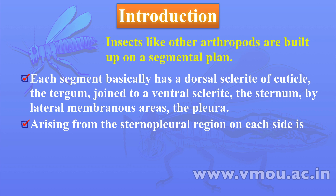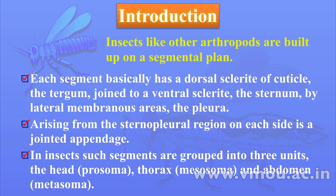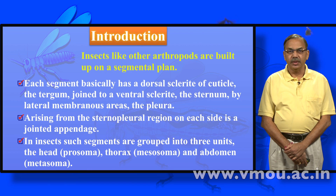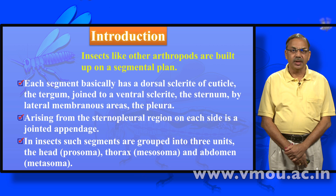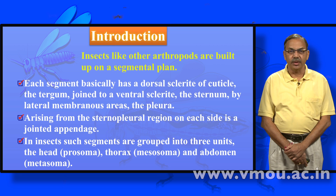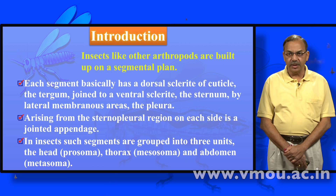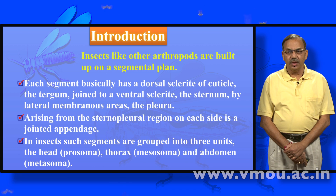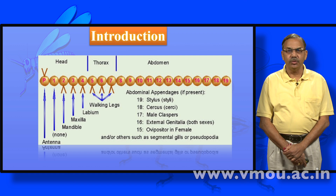The lateral membranous areas are the pleura. Arising from the sternopleural region on each side is a jointed appendage. In insects, such segments are grouped into three units: the head, thorax and abdomen. Each segment has three units — dorsal side (tergum), ventral side (sternum), and on the lateral side, the pleura on either side. Pleuron is singular; pleura is plural. In insects, the initial six segments form the head, three segments the thorax, and ten segments the abdomen.